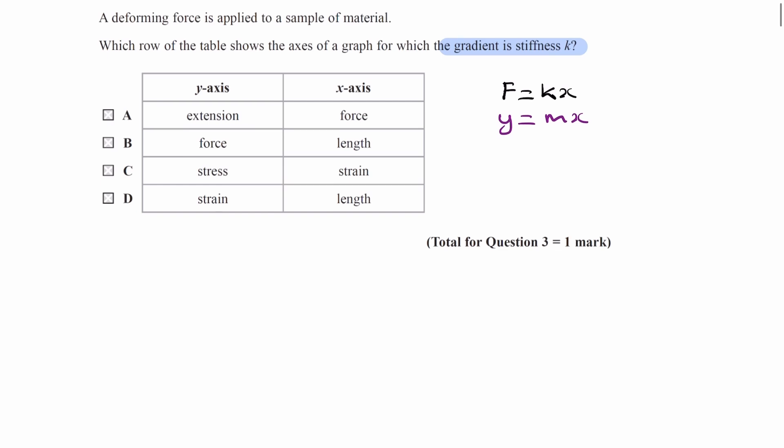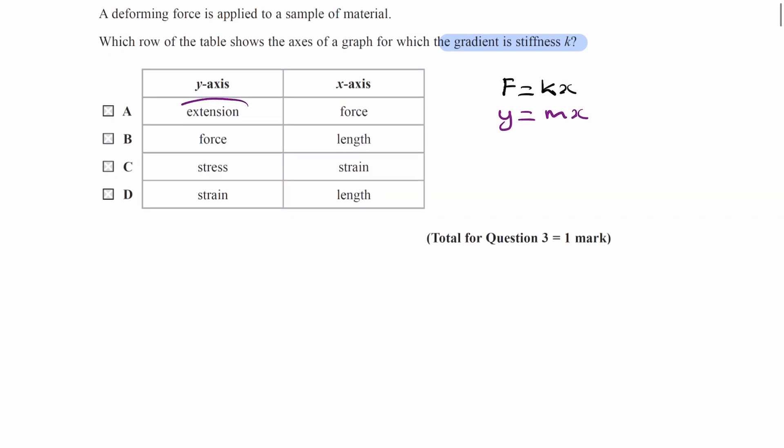Looking at option A, we have it reversed, we have extension on the y-axis, force on the x-axis. That wouldn't work, because if we were to rearrange the equation to make x the subject, x = 1/k times F, that will give us a gradient of 1/k. So it's definitely not option A.